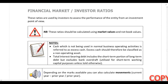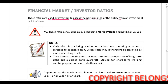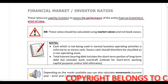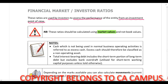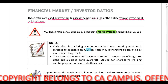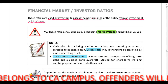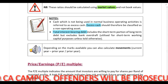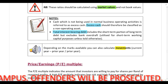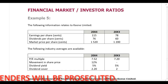We are now going to look at financial market or investor ratios. These ratios are used by investors to assess the performance of the entity from an investment point of view. At this point, you already know that all ratios should be calculated using market values and not book values. You also know how to treat excess cash, how to calculate total interest bearing debt, and depending on the marks available, you can also calculate various movements.